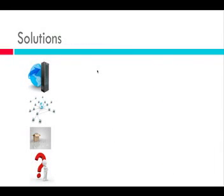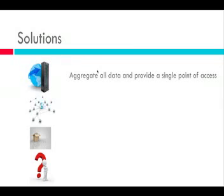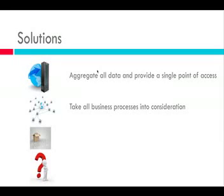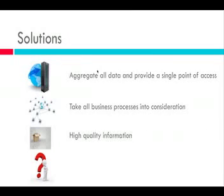So what are the solutions that Business Intelligence looks to put in place for these problems? First of all, it tries to aggregate all the data into one place where it can be accessed, which increases the performance of reports made from that data. It also tries to take all business processes into consideration — from human resources to sales, marketing, and research and development — combining this all into an accessible platform to create reports and charts that help companies make good decisions, using high quality information to drive strategic decisions.